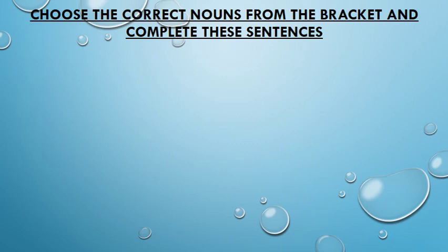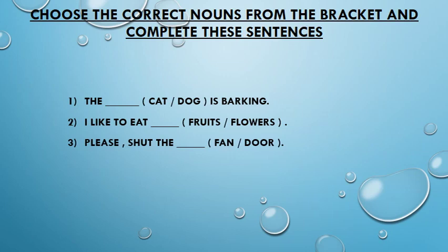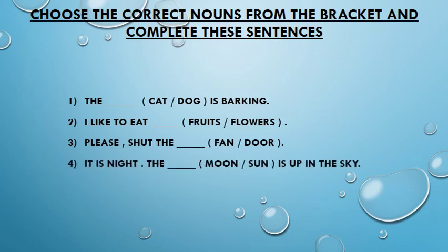Here are some more exercises for you which you can do at home. Choose the correct nouns from the bracket and complete the sentences. Number 1: The dash — cat or dog — is barking. Number 2: I like to eat dash — fruits or flowers. Number 3: Please shut the dash — fan or door. Number 4: It is night, the dash — moon or sun — is up in the sky.